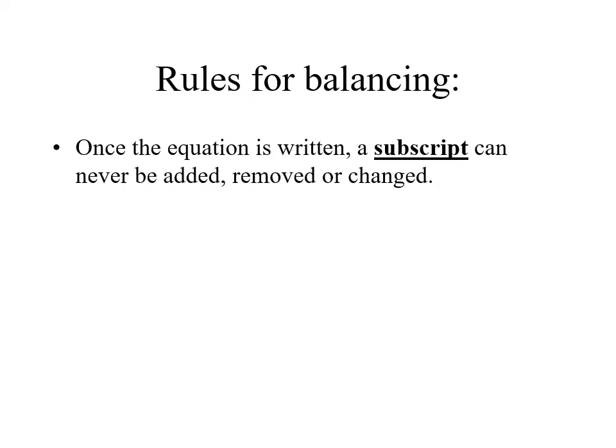Some rules for balancing: when you know the formula for the species, don't change it. The formula for carbon dioxide is CO2 — you don't get to change that just to get your equation to balance. Once you have those formulas figured out, that is what they are. Do not manipulate the formulas or the subscripts to try to get your equation to balance.